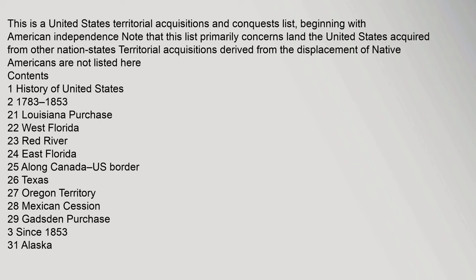This is a United States territorial acquisitions and conquests list, beginning with American independence. Note that this list primarily concerns land the United States acquired from other nation states. Territorial acquisitions derived from the displacement of Native Americans are not listed here. Contents: 1. History of United States; 2. 1783–1853, including the Louisiana Purchase, West Florida, Red River, East Florida, along the Canada–U.S. border, Texas, and Oregon Territory.